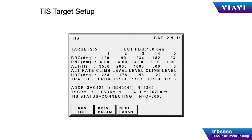The IFR 6000 can simulate up to five different targets by simply filling in the bearing, range, altitude, and altitude rate — whether the target is in climb, descend, or level flight.